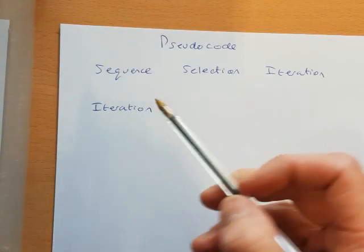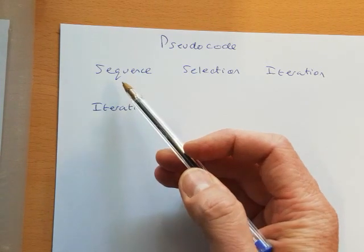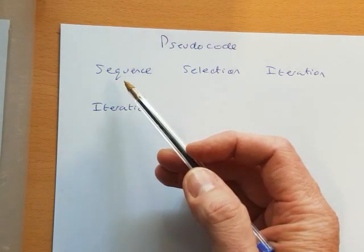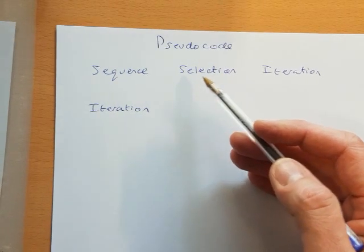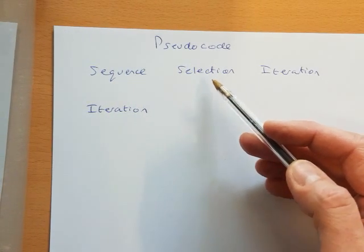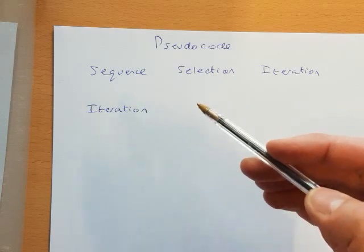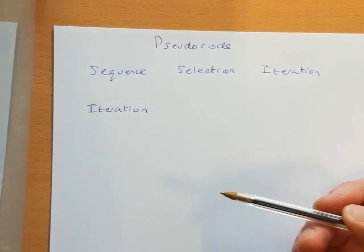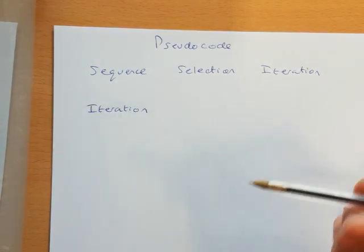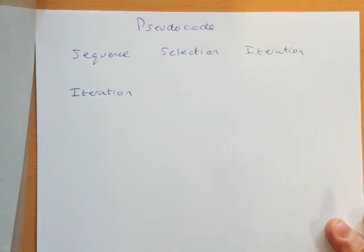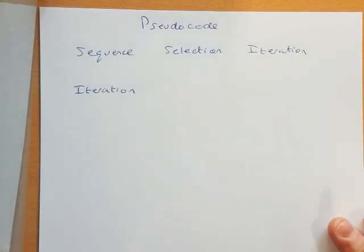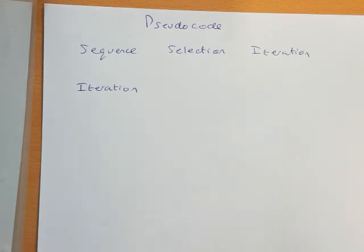Okay, and next, so we've looked at sequence - getting our instructions in the correct order. We've looked at selection where we've considered the use of if-then-else or the case statement, with the case being more efficient if we have to do lots of selections. And then finally we're going to look at iteration. So iteration basically just means repeating things, and there are a couple of ways that we can iterate.